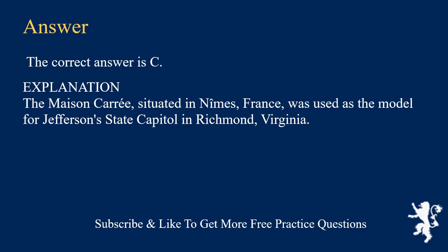Explanation: The Maison Carrée, situated in Nîmes, France, was used as the model for Jefferson's state capital in Richmond, Virginia.